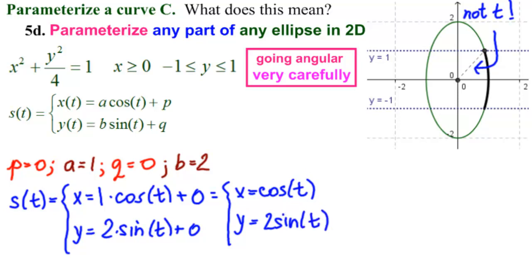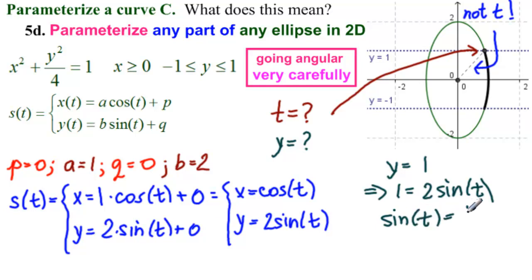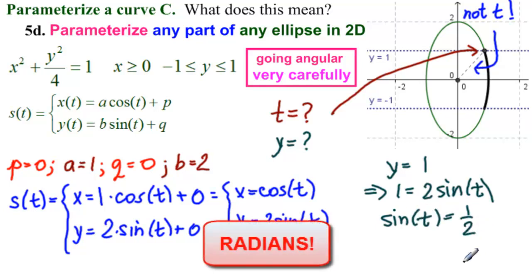Now we need our interval. And the point is, how much is t here? What is t equal to here? Well the way to do this is to say, how much is y? Well y equals 1, so then 1 equals 2 sine of t. So then sine of t equals 1 half, and we're very careful to stay in radians.